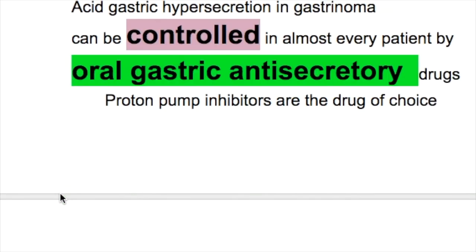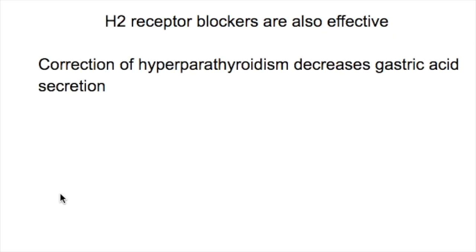Treatment involves reduction of gastric acid secretion. Acid hypersecretion in gastrinoma can be controlled in almost every patient by oral anti-secretory drugs. Proton pump inhibitors are the drug of choice; H2 receptor blockers are also effective. Correction of hyperparathyroidism decreases gastric acid secretion in these patients.